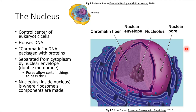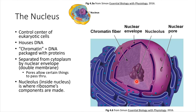There are some pores in the nuclear envelope — little spots where there are openings — and that allows certain substances to cross through. We also have inside of the nucleus something called a nucleolus.